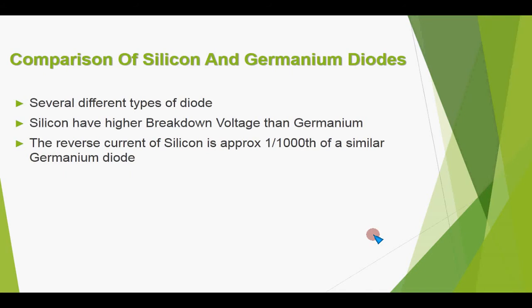When we see the characteristics of silicon as compared to germanium, silicon has a much higher breakdown voltage than germanium. When we reverse bias both the silicon and germanium diodes, the breakdown voltages of silicon are much higher than those of germanium. Another very important aspect is the reverse current.